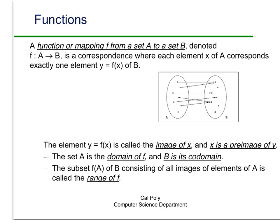And it's usually drawn this way where for each element in A you draw an arrow over to the corresponding element in B. And what that means is that no element in A can have more than one arrow and it should have exactly one arrow.